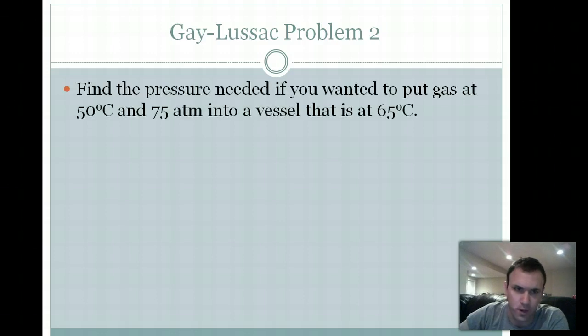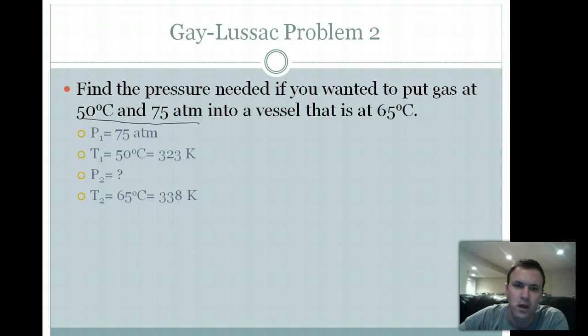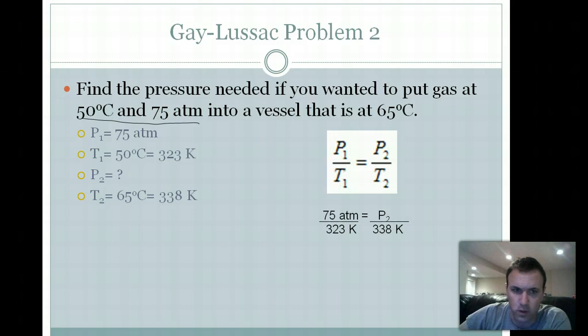Find the pressure needed if you wanted to put gas at 50 degrees Celsius and 75 atmospheres. So those two numbers are together. 50 degrees Celsius and 75 atmospheres. So that's going to be our first pressure and our first temperature. All right, as you see here on the PowerPoint, temperature is converted to Kelvin for you. You want to put it into a vessel that's at 65 degrees Celsius. Now what pressure is that? Now this is really important because if you need to put a bunch of air or something into a new vessel, you have to take into account where you're going to store it. So if it's going to be in a hotter storage room, you want to be sure that this new vessel can withstand whatever pressure it's going to have when you raise that temperature up. All right, substitute it in as before. 75 times 338, 323 times P2, and you should get 78 atmospheres.